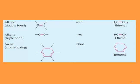Another group is alkynes, which are organic compounds that have a triple bond. All members of the alkyne family end in '-yne'. An example is ethyne or acetylene, which has the structure CH≡CH.